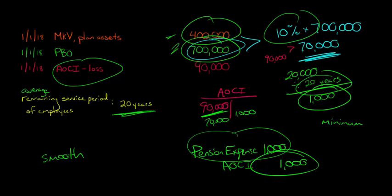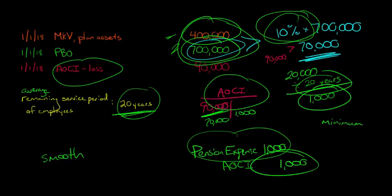And we're going to recompute. We're going to go through the same process, take 10% of the greater of these two numbers. That's our corridor. Then we're going to go to AOCI, see how much we exceed it, and then divide by the average remaining service period.